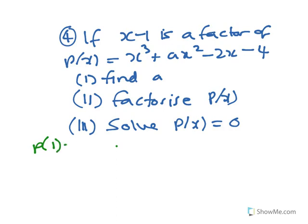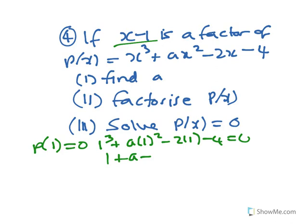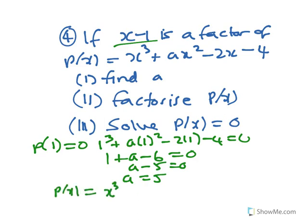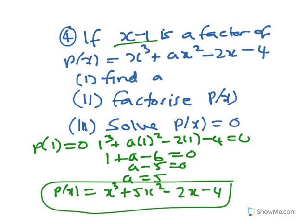Another question: p(1) equals 0 because x minus 1 is a factor. So 1 cubed plus a times 1 squared minus 2 times 1 minus 4 equals 0, giving 1 plus a minus 6 equals 0, so a minus 5 equals 0 and a equals 5. Therefore p(x) equals x cubed plus 5x squared minus 2x minus 4.